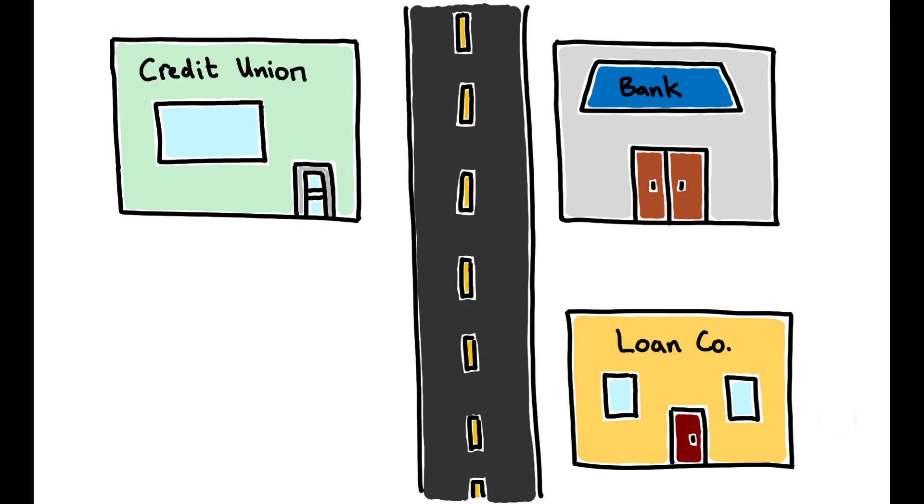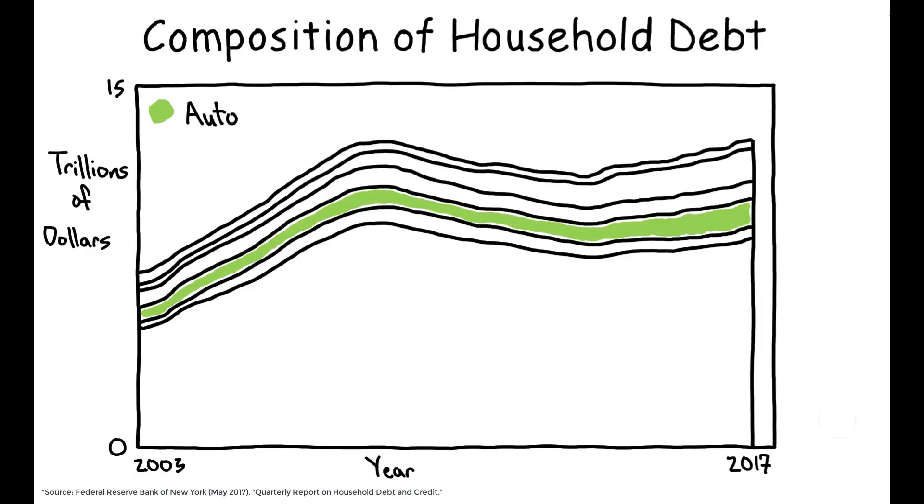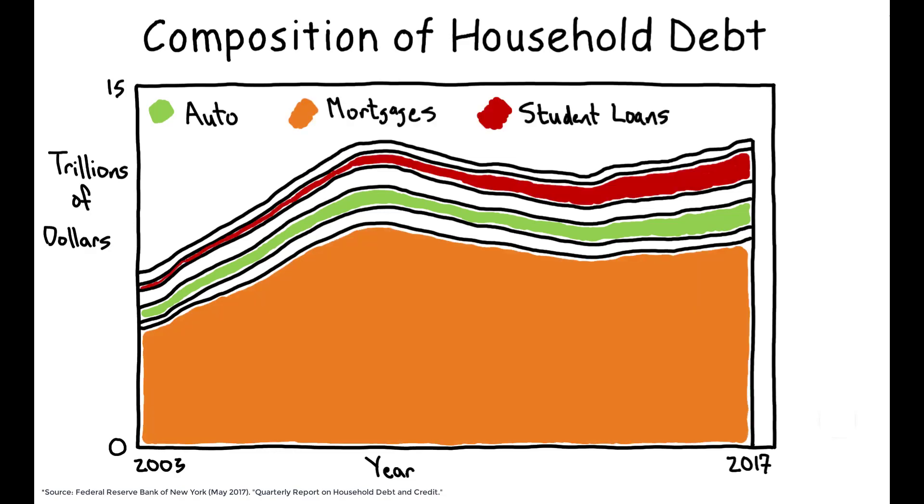In particular, they focus on auto loans. With over 106 million outstanding loans totaling 1.15 trillion dollars in aggregate, auto debt is the fastest growing category of consumer debt in the US, smaller than only mortgages and student loans.